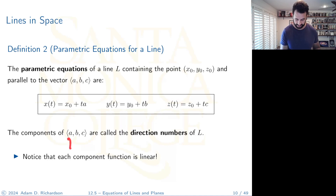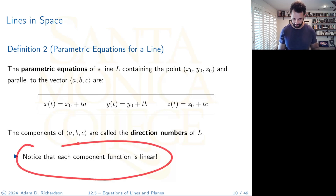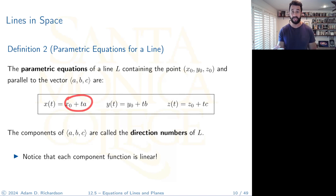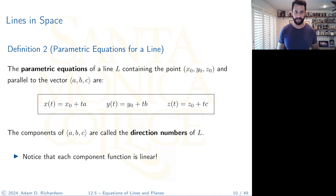The numbers a, b, and c are called the direction numbers of L because they tell you which direction to move and how far along the different coordinate axes. Notice that each component is a linear function — these are literally mx + b for each component — so the result has to be a line in space.